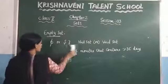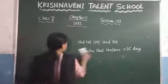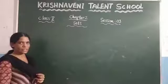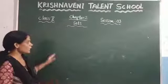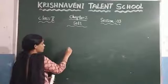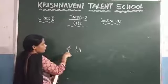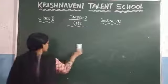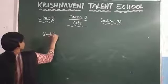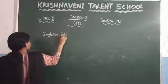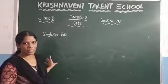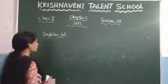Now consider the next type of set, which is the singleton set. The empty set is the set that does not contain any elements; we also call it a void set or null set, denoted by ∅. Now for the singleton set: if a set contains only one element, we call it a singleton set.